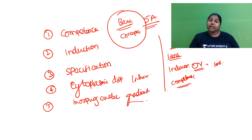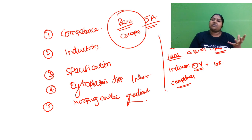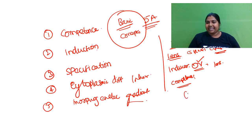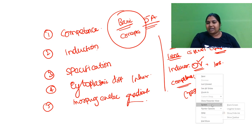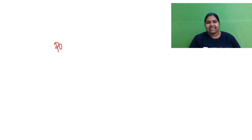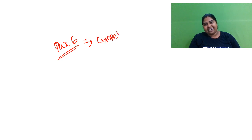The receiver is there, but the receiver must have competence. Even though an inducer is present, you require competence — if competence is not there, the responder may not respond properly. This competence is provided by an important gene called PAX6, which is the competence factor.